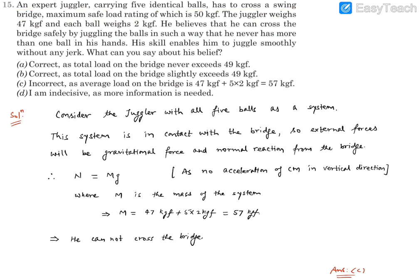The juggler's mass is 47 kg force and 2 kg force is the weight of each ball. If he has only one ball in his hand, then the total mass is going to be 47 plus 2, that is 49 kg force. And the maximum safe load for the bridge is 50 kg force. Then he will be able to cross this bridge safely.